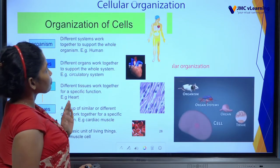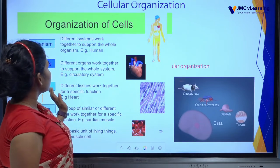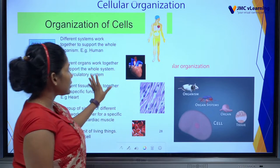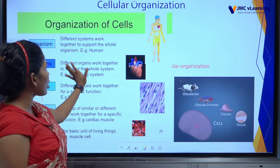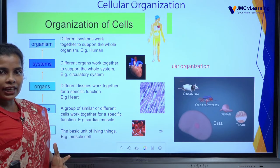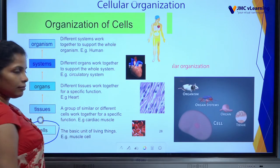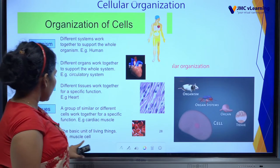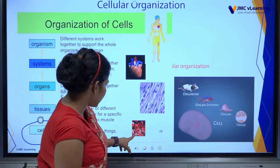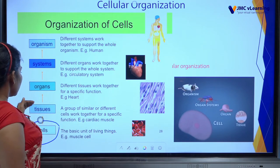Now the last characteristic of living organisms — Cellular Organization. The simply meaning is the organization of living organisms. The smallest and basic unit is the cell — for example, muscle cells and red blood cells. These are cells.